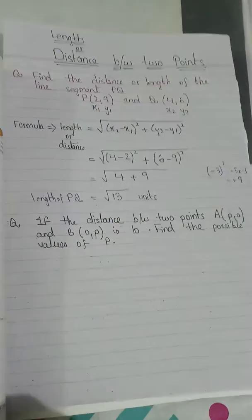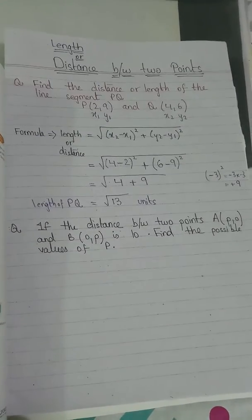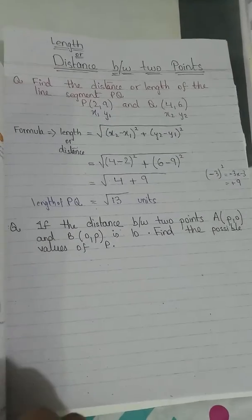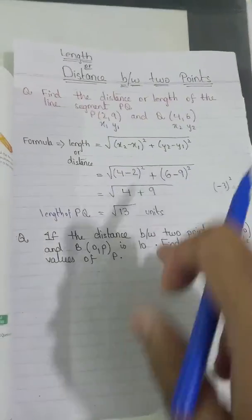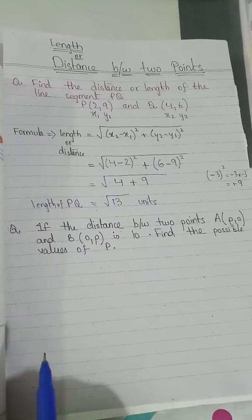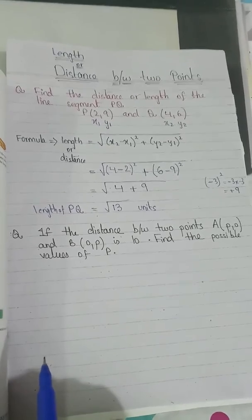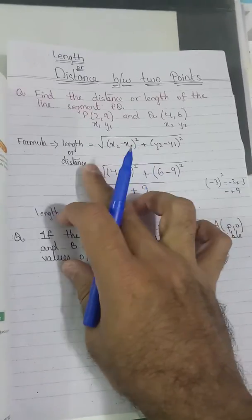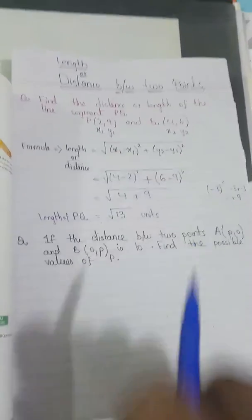As we discussed earlier in our previous video, we can use the gradient to find the unknown coordinates. We can use the distance formula as well to find the value of an unknown coordinate. So this is an example in front of us, and we have our distance formula: length equals square root of (x2 minus x1) squared plus (y2 minus y1) squared.